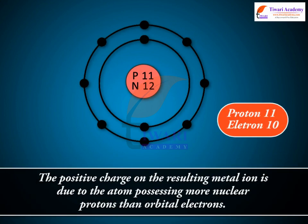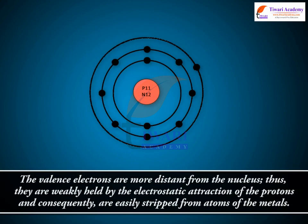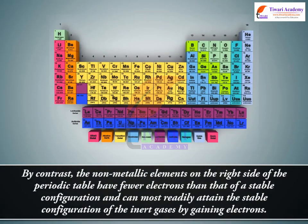The positive charge on the resulting metal ion is due to the atom possessing more nuclear protons than orbital electrons. The valence electrons are more distant from the nucleus. Thus, they are weakly held by the electrostatic attraction of the protons and consequently are easily stripped from atoms of the metals.